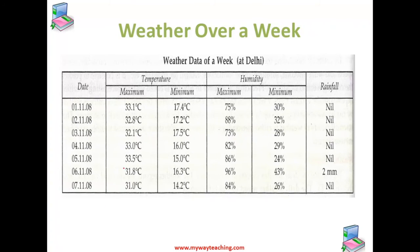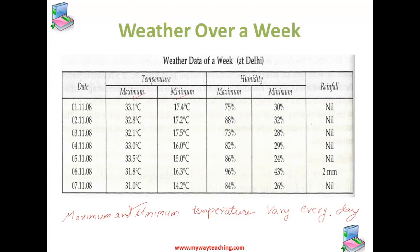Here is the picture of the data for the whole week at Delhi. If we study this data, we have maximum and minimum temperatures for seven days, and we can clearly see that the maximum and minimum temperatures each day are varying — they are not the same for the whole week. Similarly, if we study the maximum and minimum humidity, they are also varying every day.